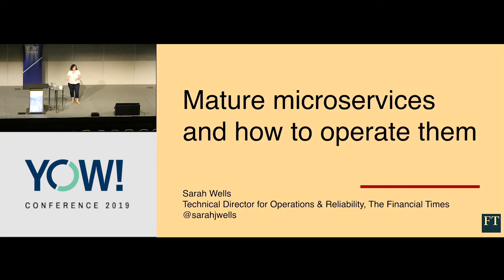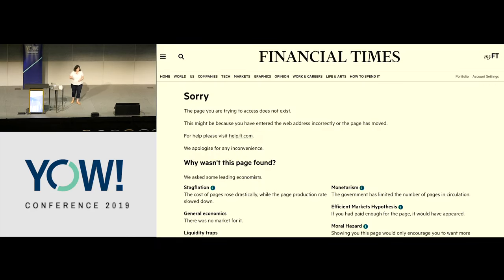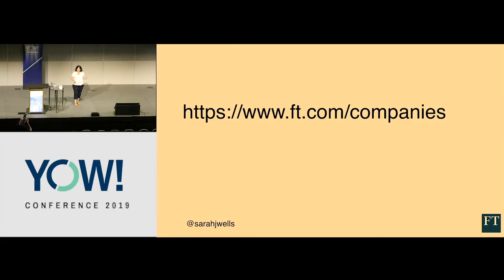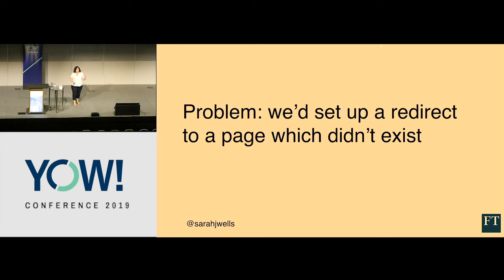I'm going to start by talking about some of the kinds of things that can go wrong. Towards the end of last year, we got reports that people hitting FT.com were getting a 404 page. Quite quickly, we realized the problem had to do with a redirect that had been set up. We have a lot of redirects on FT.com — something like 70,000 — because our URLs contain unique identifiers that aren't easily shareable, so we have friendlier URLs. That's all managed via a small microservice we wrote a couple of years ago. We realized we'd set up a redirect from one of our main pages to a page that didn't exist.